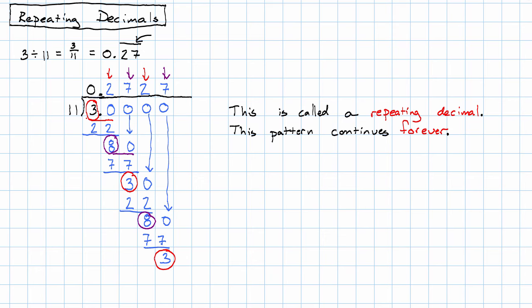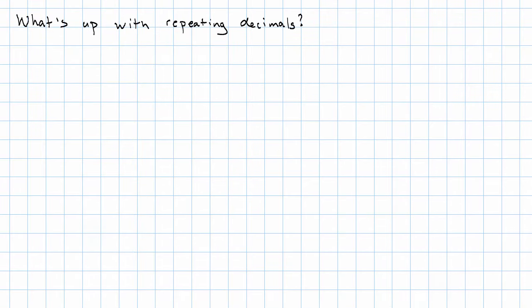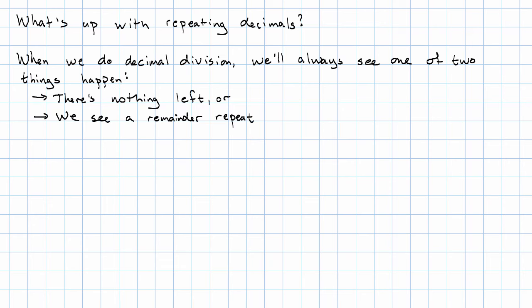What's going on with repeating decimals? The first thing to be aware of is that when we're doing long division, we're always going to either have nothing left or see a remainder repeat. If we get to the point where there's nothing left, that means our answer is a terminating decimal, so a decimal that does not repeat.